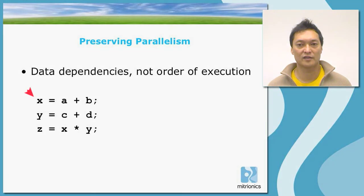So in the example, we have x equals a plus b, y equals c plus d, and z equals x times y. In this example, the computation of x and the computation of y are independent. This means that they can be performed simultaneously, because there are no data dependencies between the computation of those two variables. However, z is dependent on the result of x and the result of the computation of y. So therefore, z has to be computed after x and y have been computed.